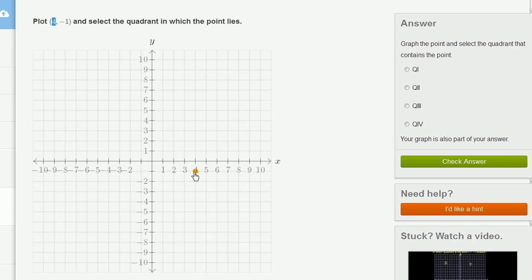So I've plotted it, but now I have to select which quadrant the point lies in. And this is just a naming convention. This is the first quadrant. This is the second quadrant. This is the third quadrant. And this is the fourth quadrant.